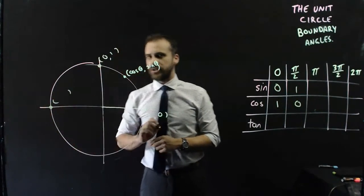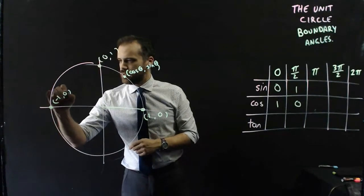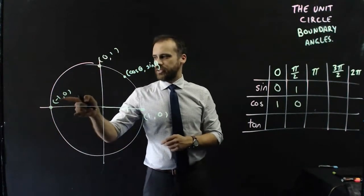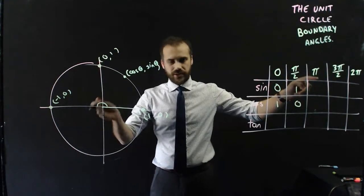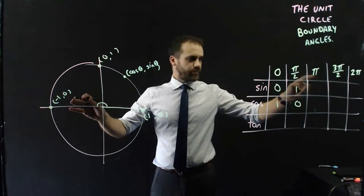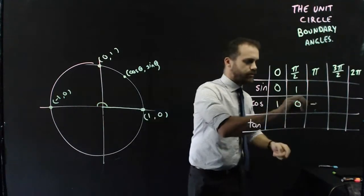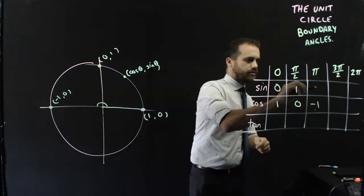the coordinates of that dot are negative 1, 0. Cos theta, sine theta. That's pi. That's angle pi there. So we have cos theta negative 1, sine theta 0.